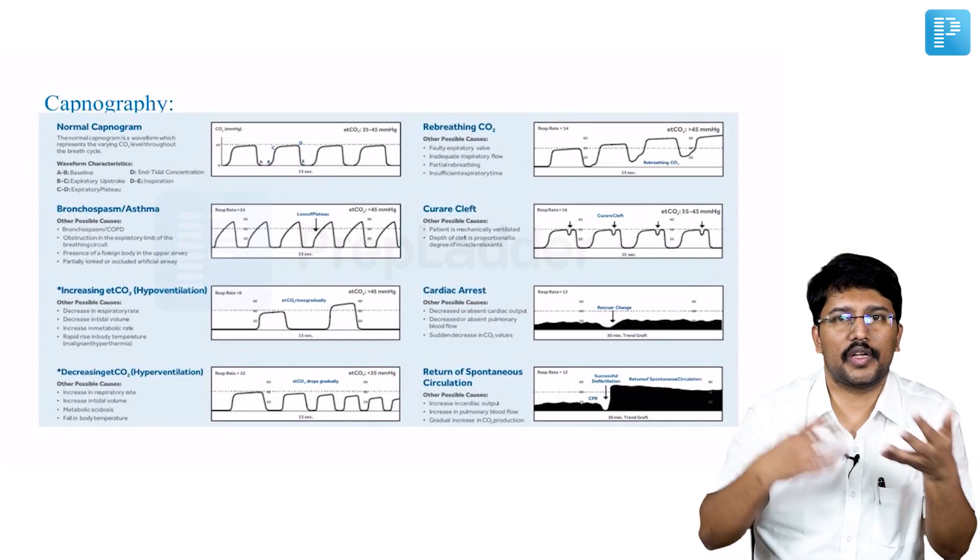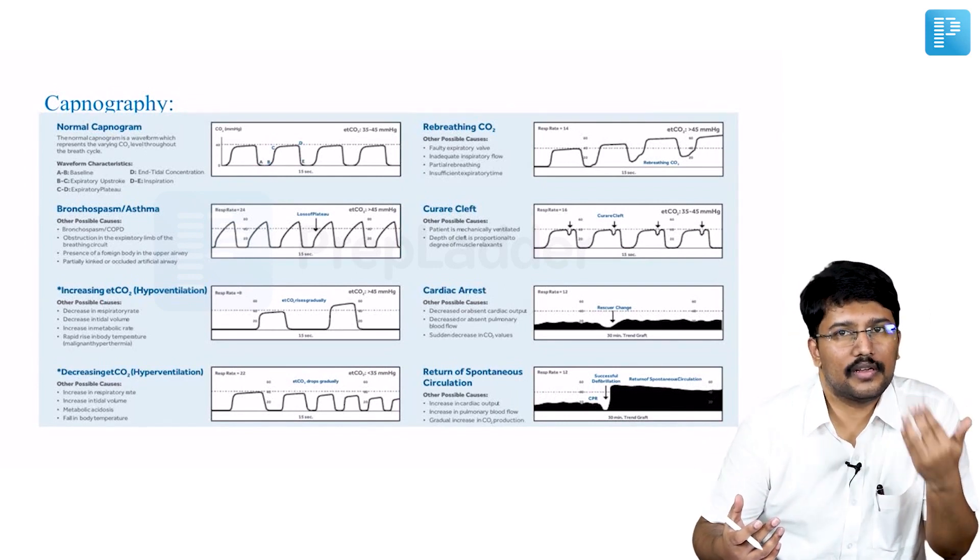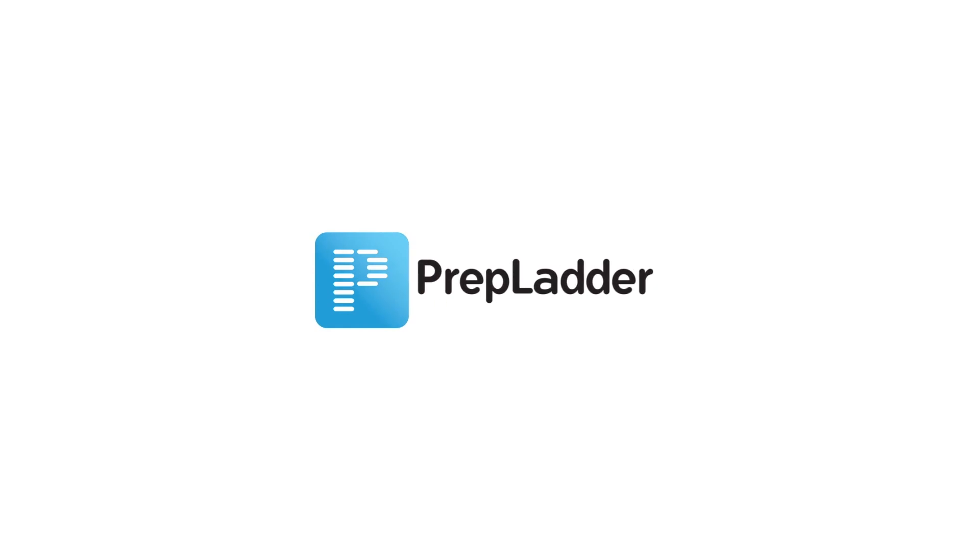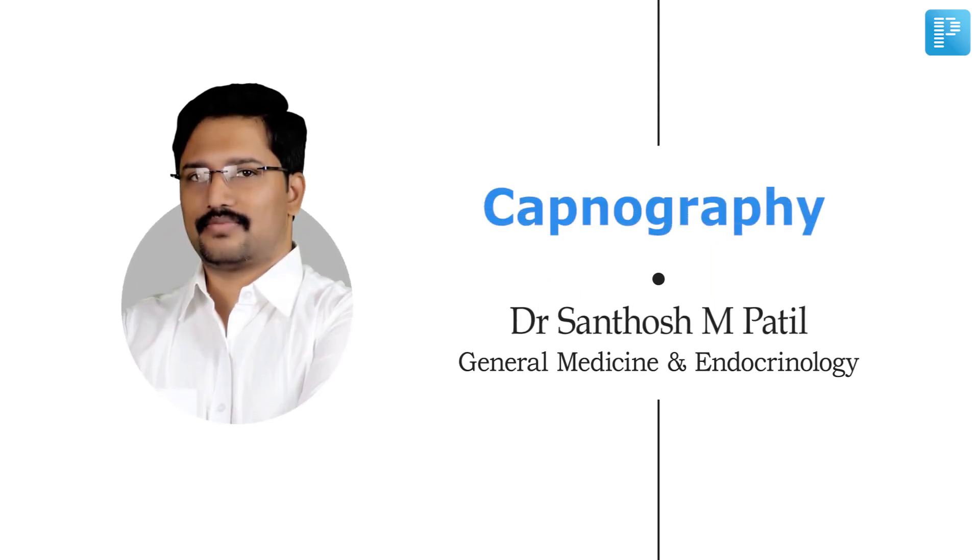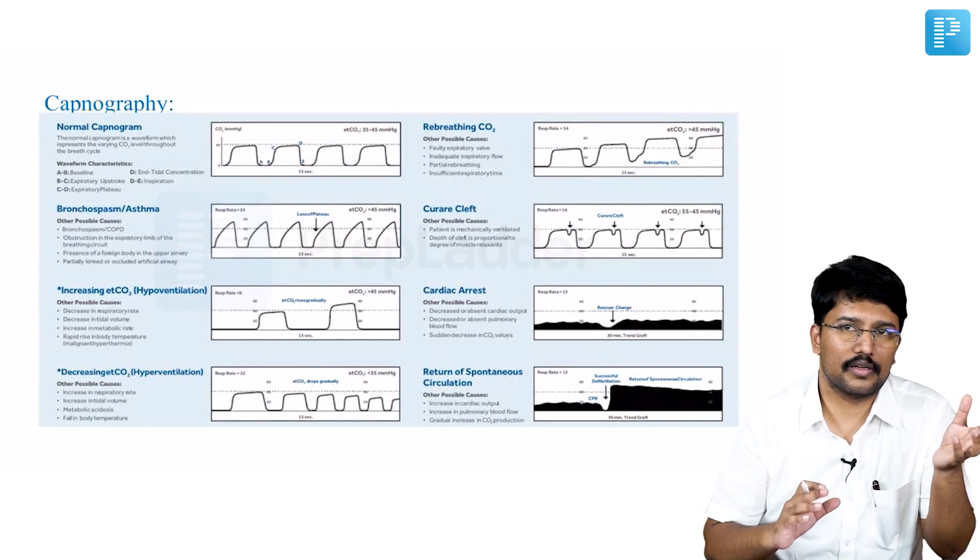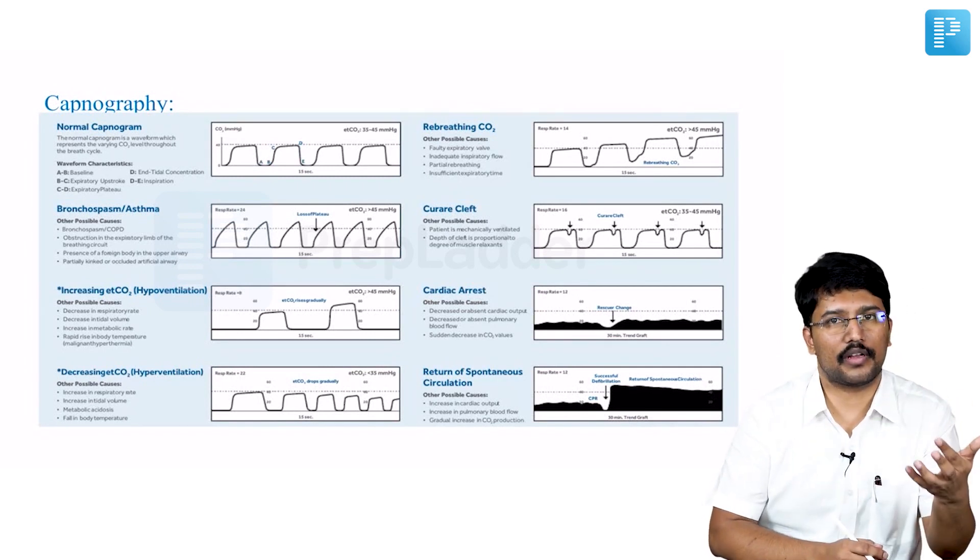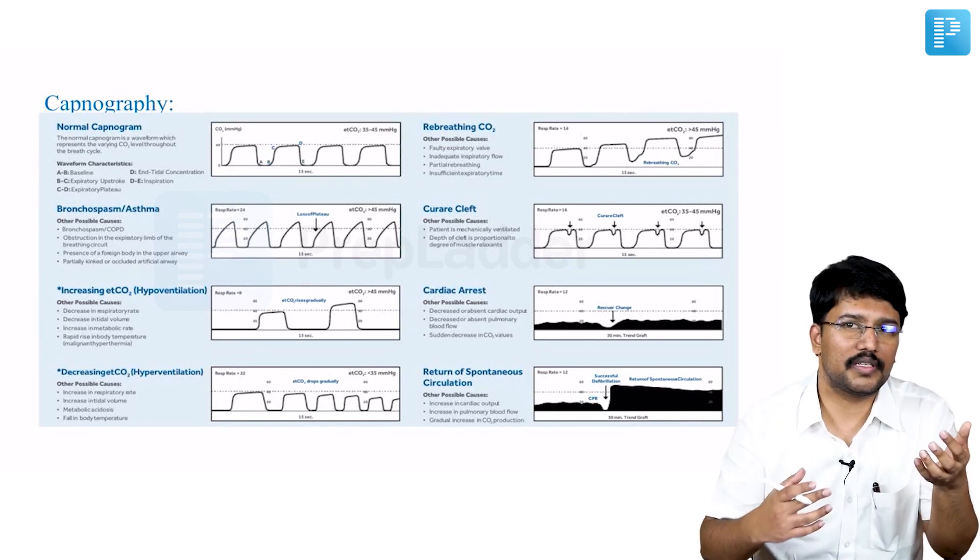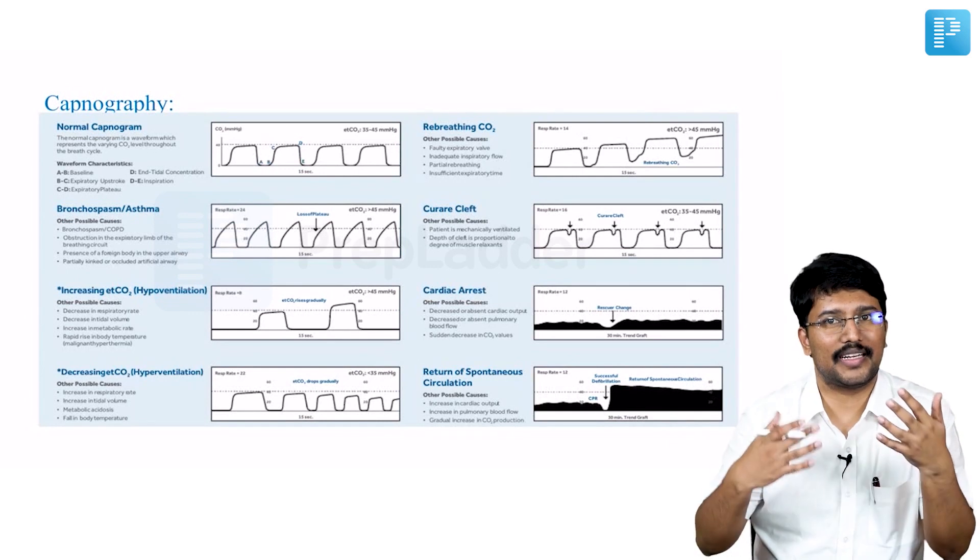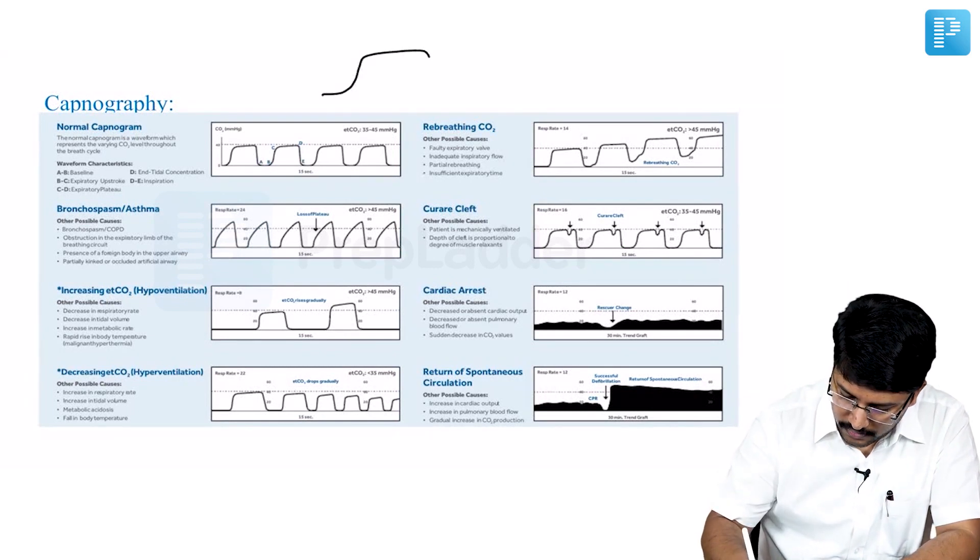So what is capnogram? This is basically a graphical plot representing the varying levels of carbon dioxide exhaled during your one breath cycle. Now let us discuss about capnography. Like how we are measuring SpO2 and oxygenation levels in pulse oximetry, we are measuring exhaled carbon dioxide in capnography. So when you plot that, you get a graph like this.